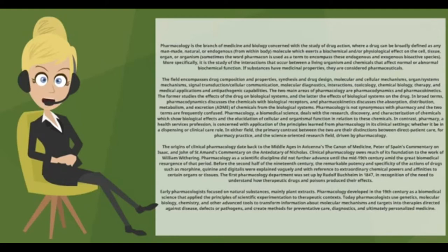The two main areas of pharmacology are pharmacodynamics and pharmacokinetics. Pharmacodynamics studies the effects of the drug on biological systems, while pharmacokinetics studies the effects of biological systems on the drug. In broad terms, pharmacodynamics discusses the chemicals with biological receptors, and pharmacokinetics discusses the absorption, distribution, metabolism, and excretion of chemicals from biological systems.